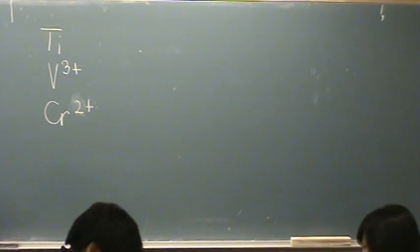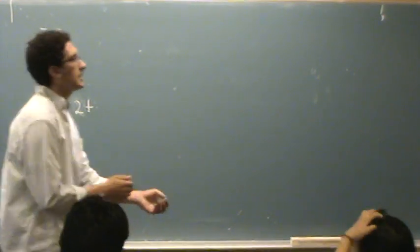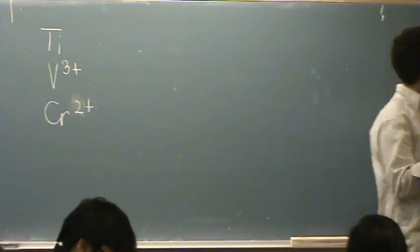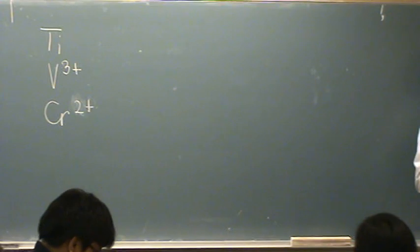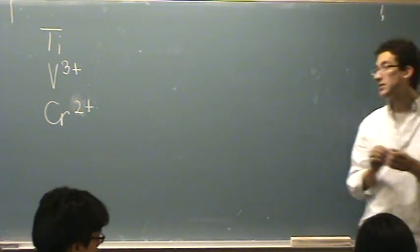So electron configurations for some of these. Titanium is in the fourth column, the second column of the transition metals. So that would be a 4s2 3d2.